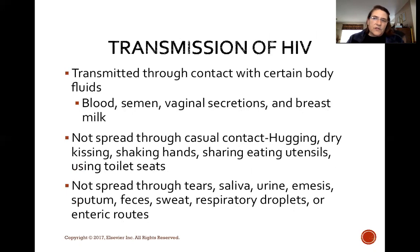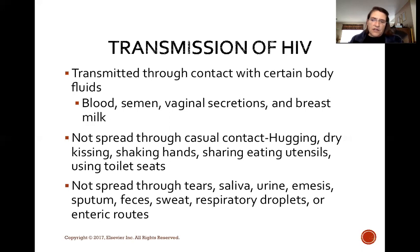Transmission of HIV occurs through contact with certain body fluids: blood, semen, vaginal secretions, and breast milk. It is not spread through casual contact such as hugging, dry kissing, shaking hands, or sharing eating utensils. It is not spread through tears, saliva, urine, emesis, sputum, feces, sweat, respiratory droplets, or enteric routes.